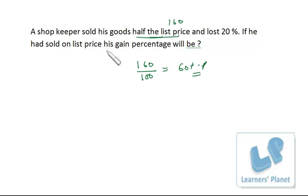Now in the next case, he is selling the goods on list price. That means the selling price is 160 rupees in this case. Cost price we assume to be 100. So the profit is 60%.